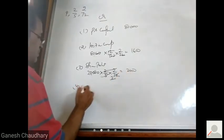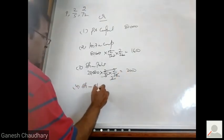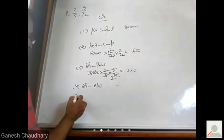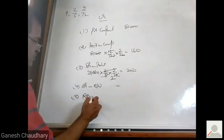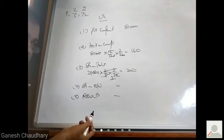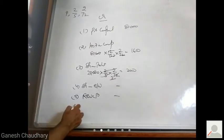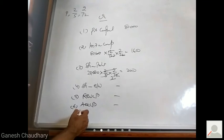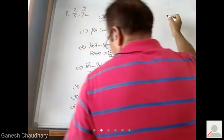Fourth, sharing goodwill - check. Sharing goodwill has not given, dash. Fifth is revaluation profit, dash, it has not given in your question. Sixth, accumulated profit has not given. Next.